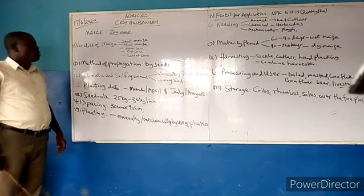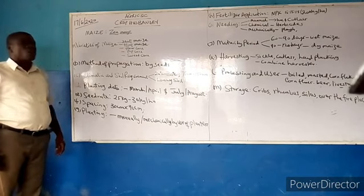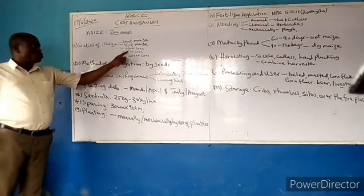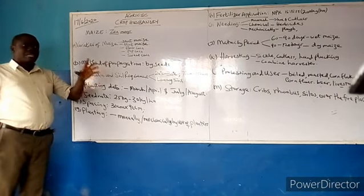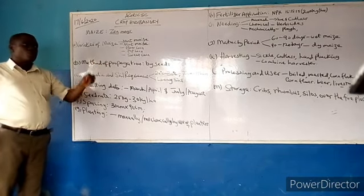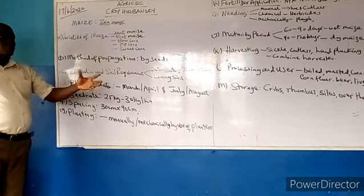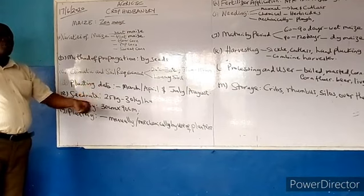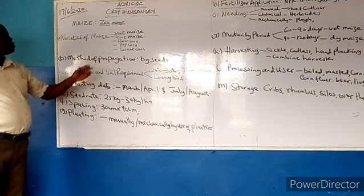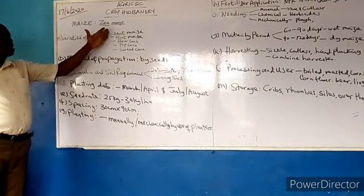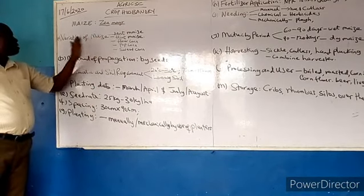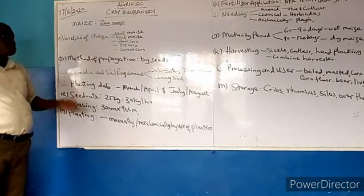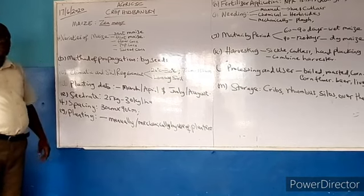Other varieties include corn, flour corn, popcorn, and sweet corn. We all know what popcorn is — that is the kind of corn you heat up and it pops. So there are different types of varieties or species of maize.